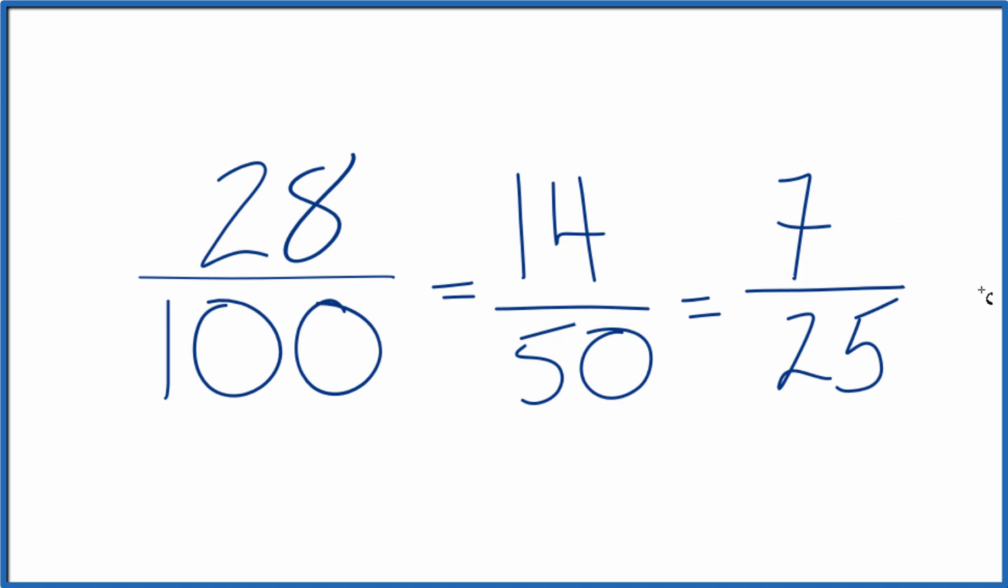And we can't reduce 7 25ths any further. It's in lowest terms. So in answer to our question, when we simplify the fraction 28 100ths, we end up with 7 25ths in lowest terms.